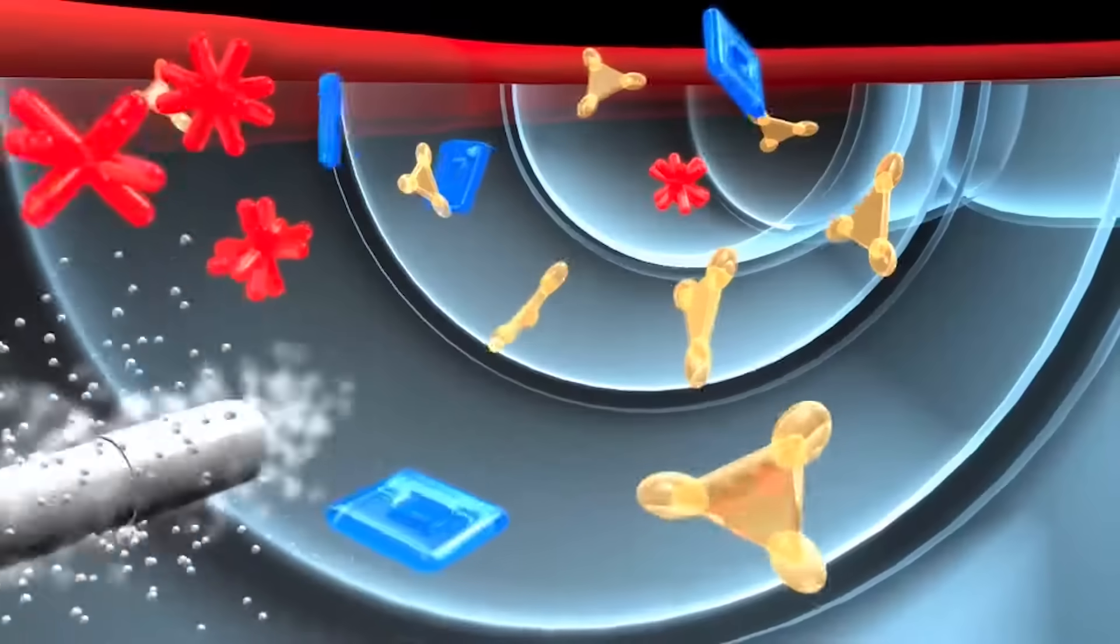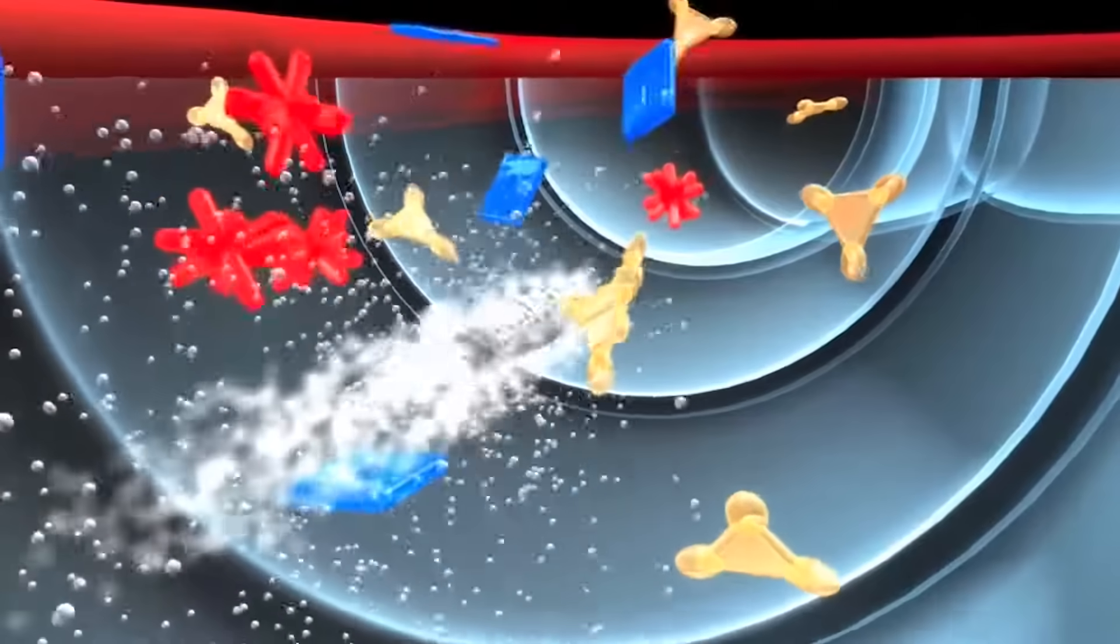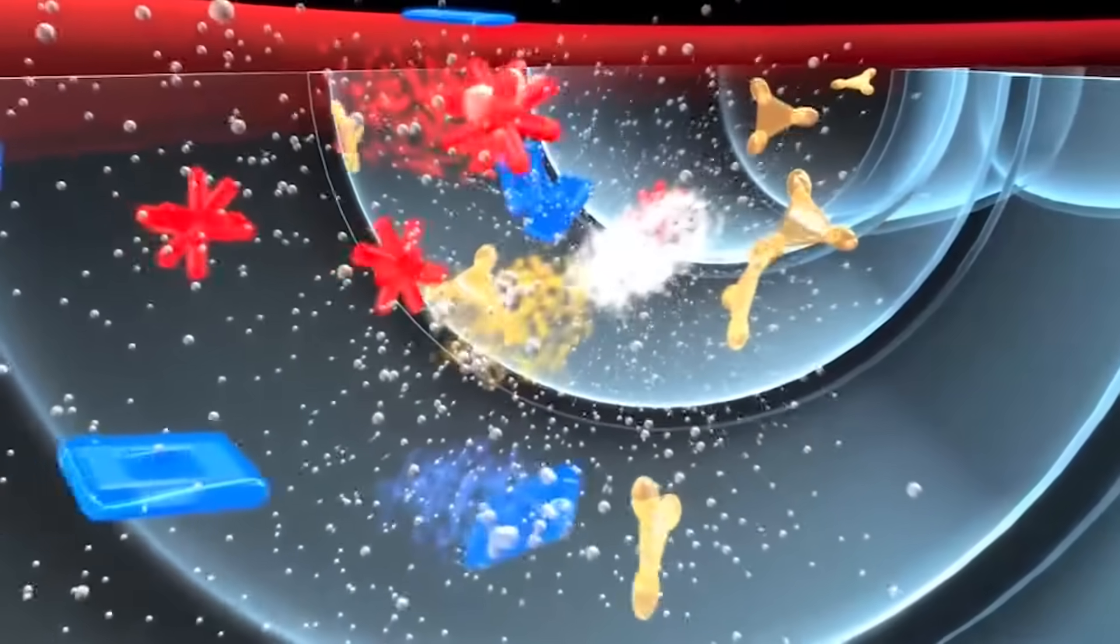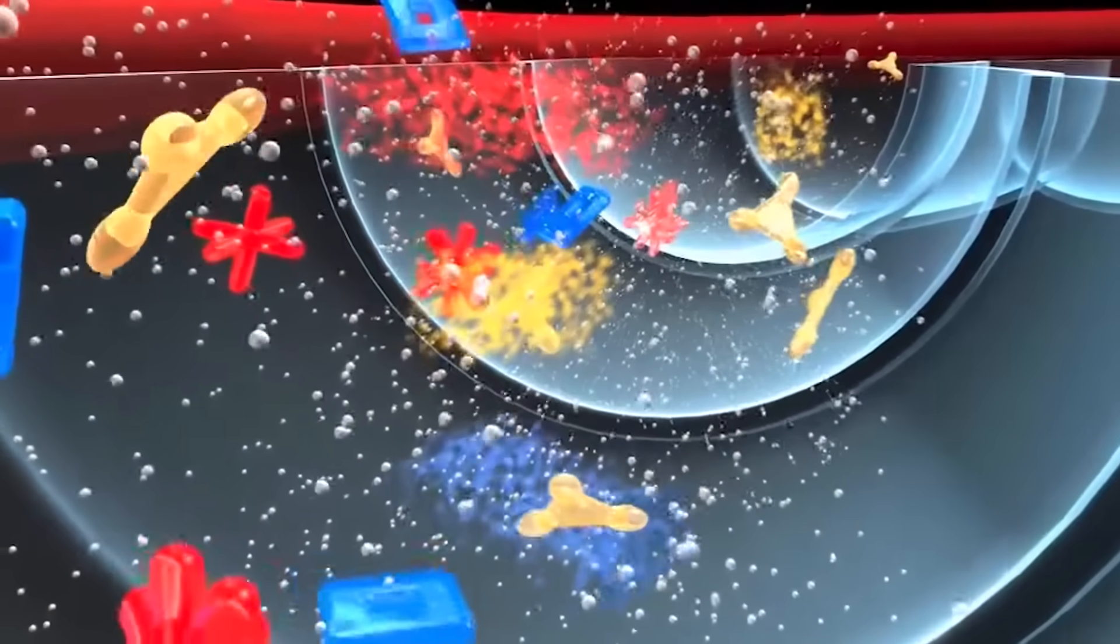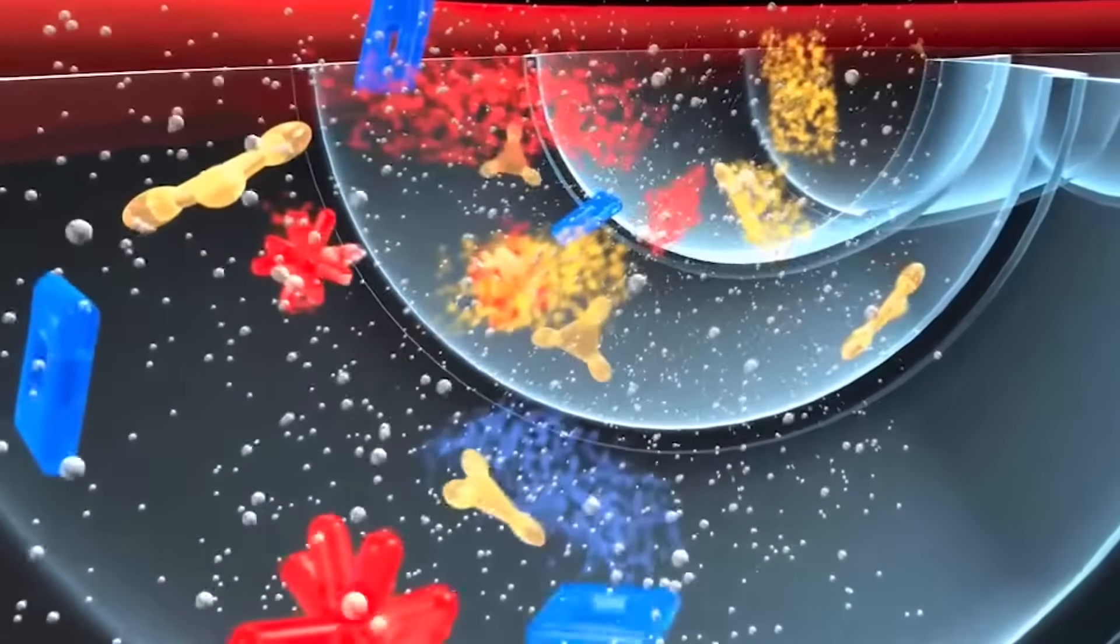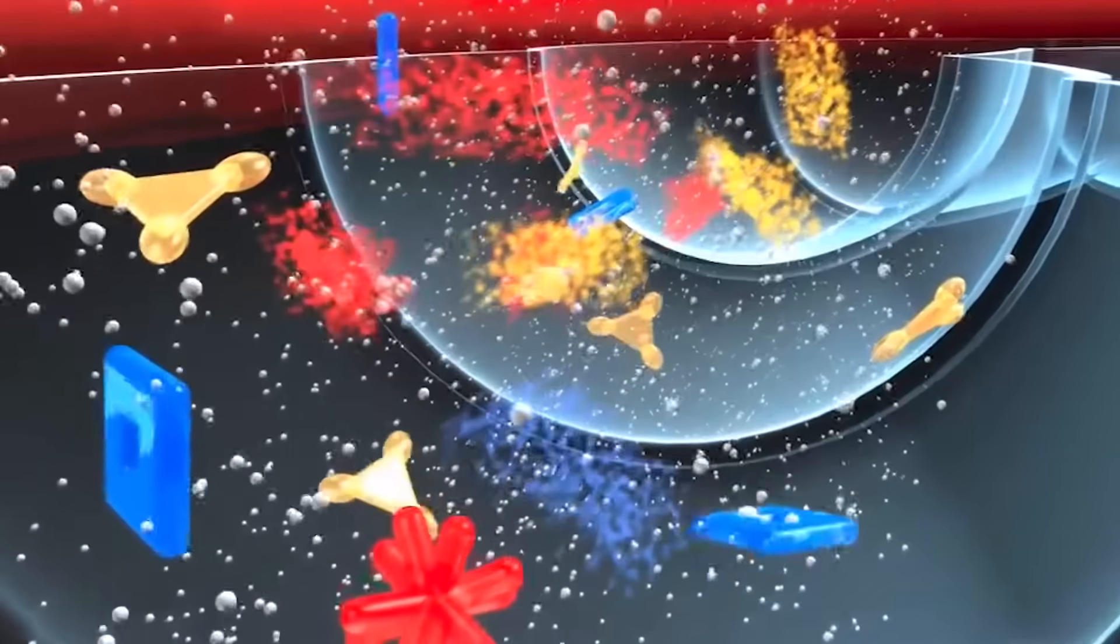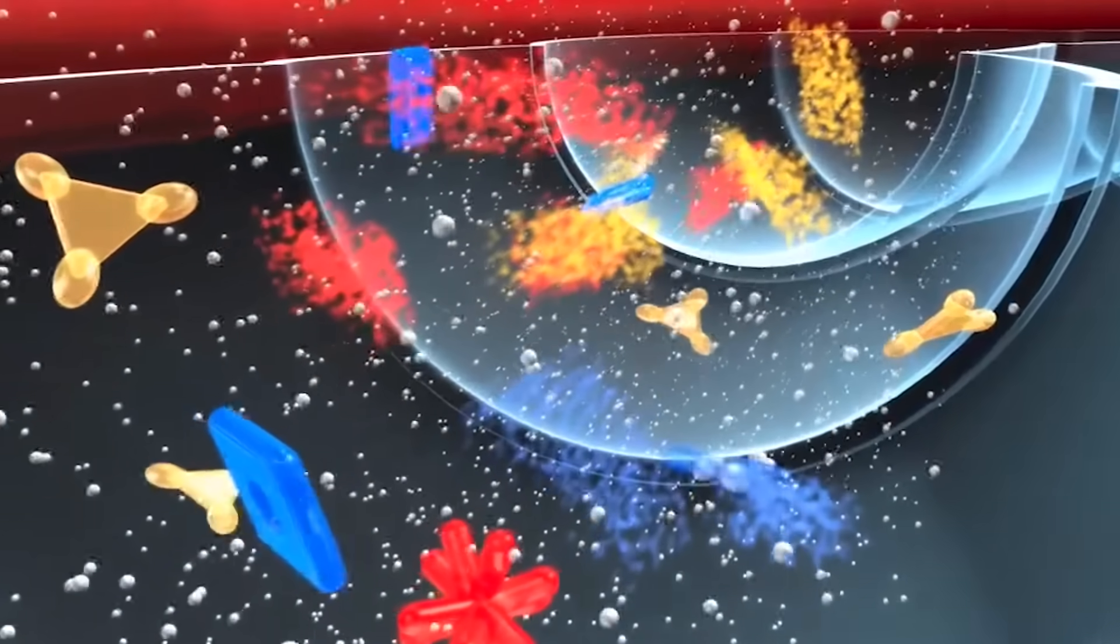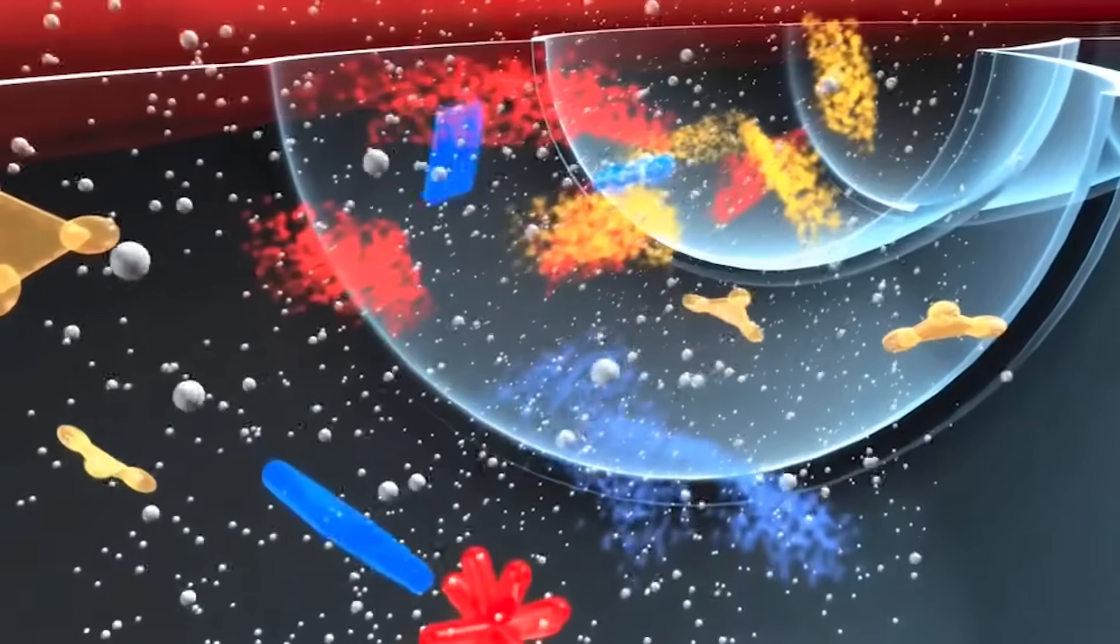probiotic microbes are released from a protective enteric coated capsule into the ileocecal region of the colon and enteric toxin reduction begins. The microbes, which have a high affinity for the toxins, then metabolize them as nutrients.